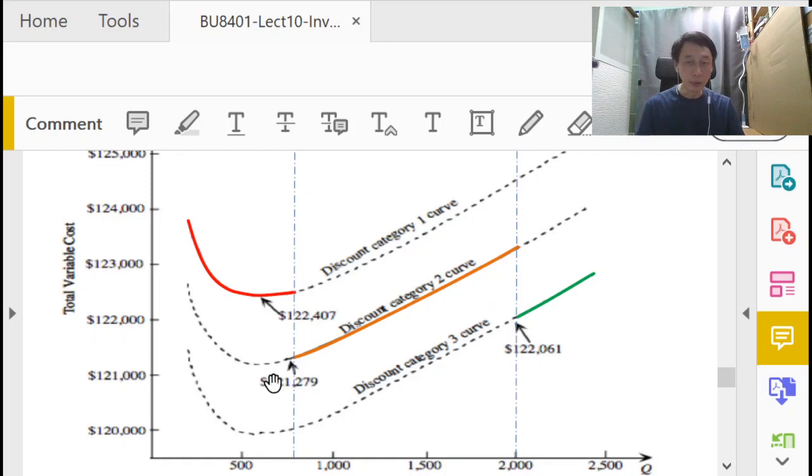Again, we do the same for the third tier. This time around, because EOQ is to the left, the lowest quantity is here. We have plotted these three segments, highlighting the parts that are feasible to us that will be experienced by us when we make those quantities of purchases.